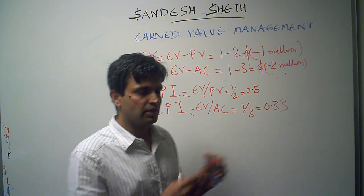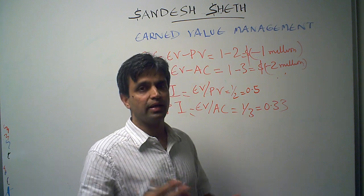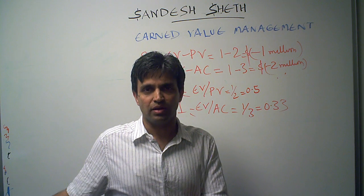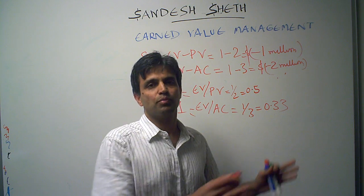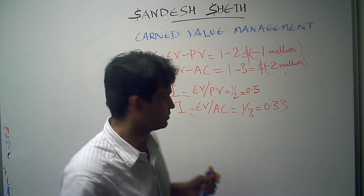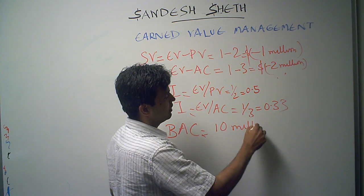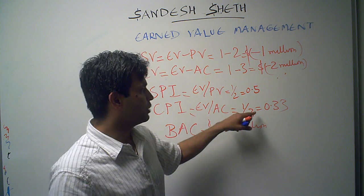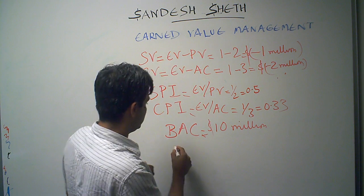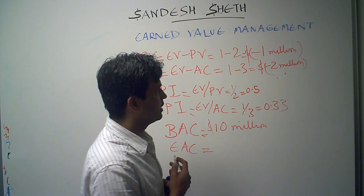So now I know that in this project my total budget was $10 million and 2 months down the line I have already expended $3 million. If I assume that whatever I have done in the past 2 months is the way the project is going to continue for the balance 8 months, what is the budget? My initial budget at completion was $10 million, but with these new figures there would be a change, and it would be an expected budget at completion. A simple way of looking at it is that in 2 months...